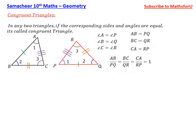AB/PQ equals 1, BC/QR equals 1, and CA/RP equals 1. Therefore, AB/PQ equals BC/QR equals CA/RP equals 1.